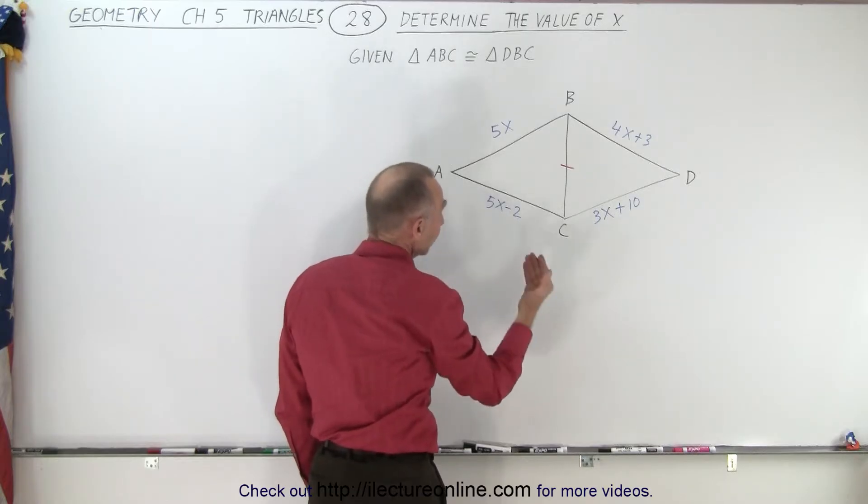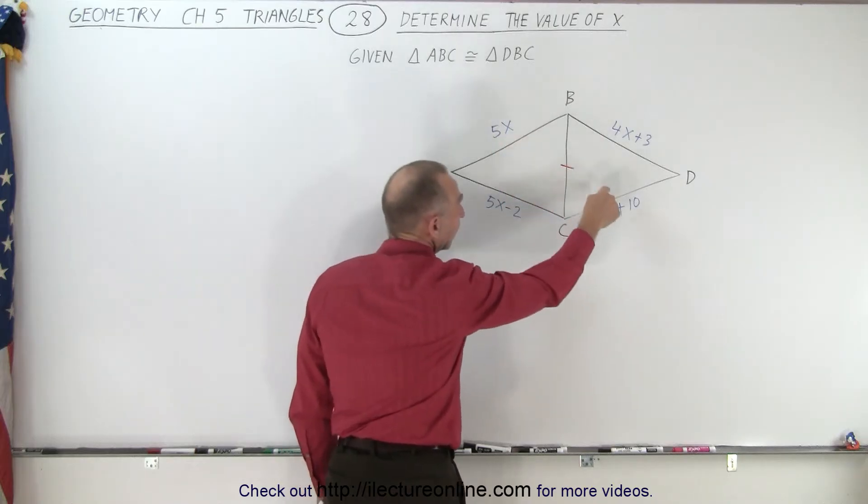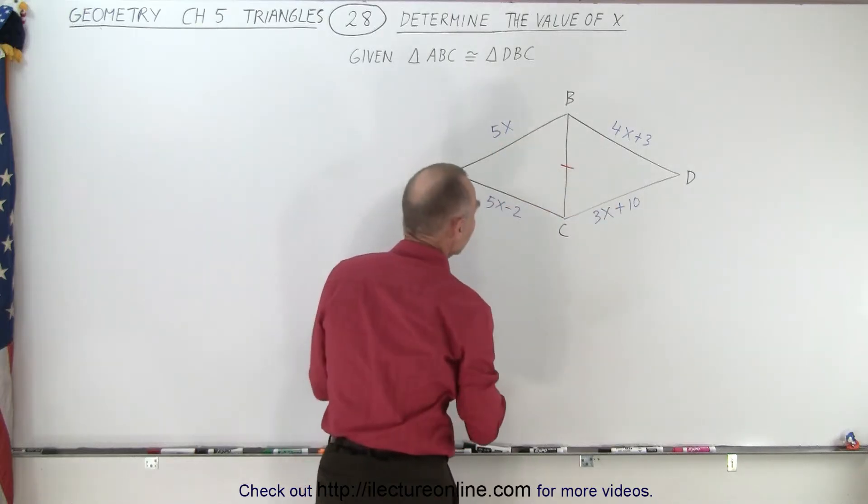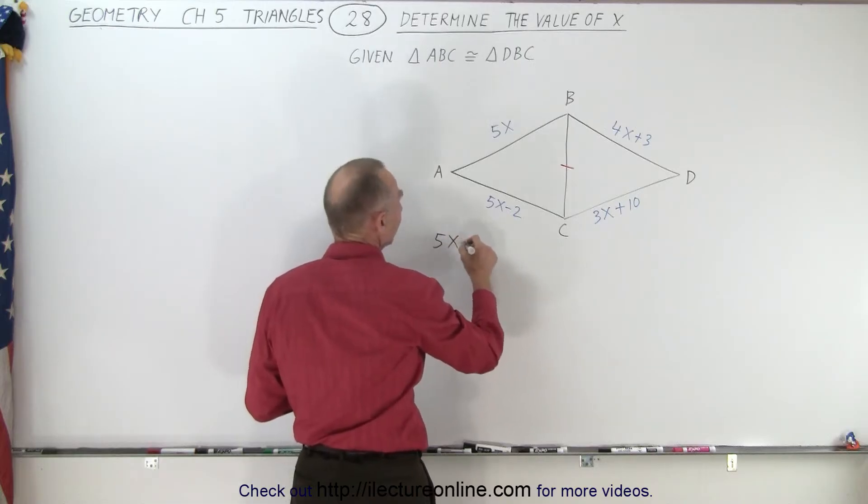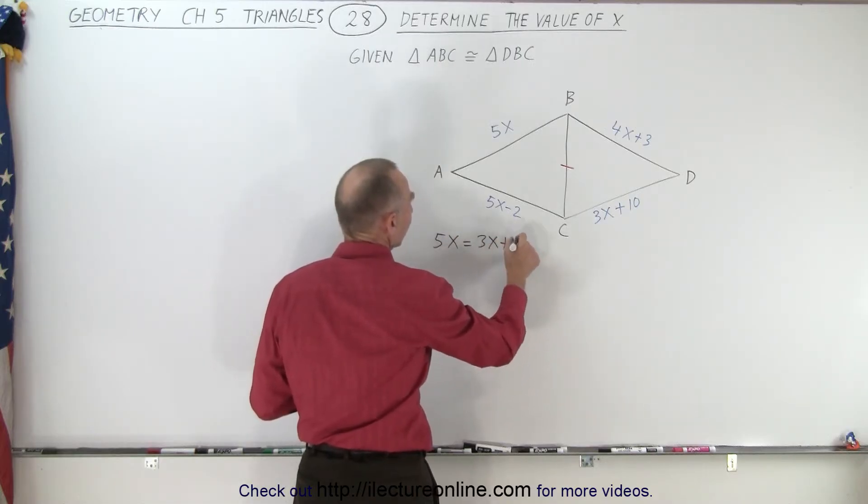Therefore, if they're congruent, that means that this side must have the same length as this side. From that, we can conclude that 5x is equal to 3x plus 10.